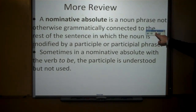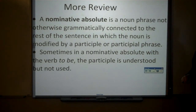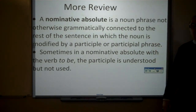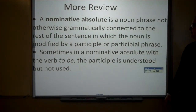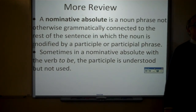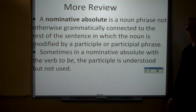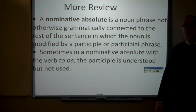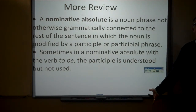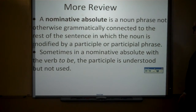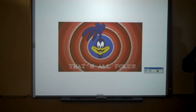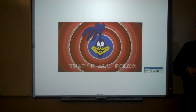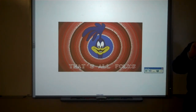Remember, a nominative absolute is a noun phrase not otherwise grammatically connected to the rest of the sentence, in which the noun is modified by a participle or participial phrase. Sometimes with the verb to be, the participle is understood but not used. Nominative absolutes are not real common, but they do occur in English and make perfect sense. That's all for today — verbals, participles, present participles, past participles, participial phrases, nominative absolutes. Have fun with the homework.